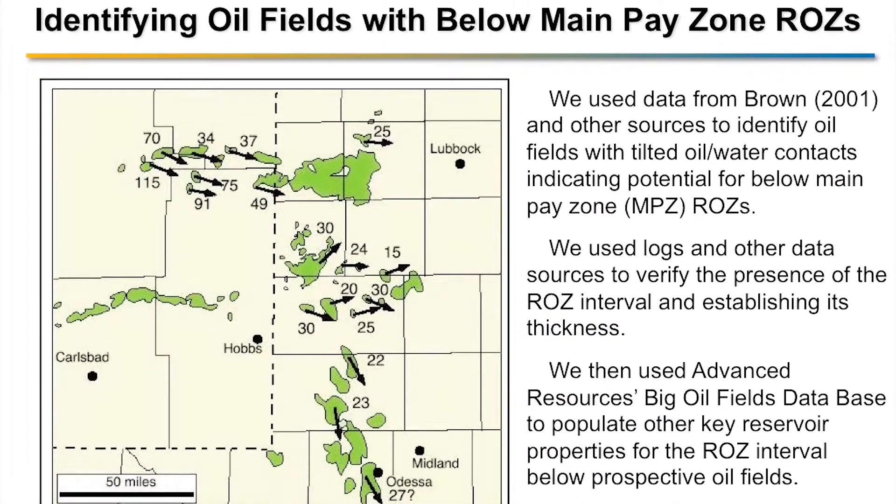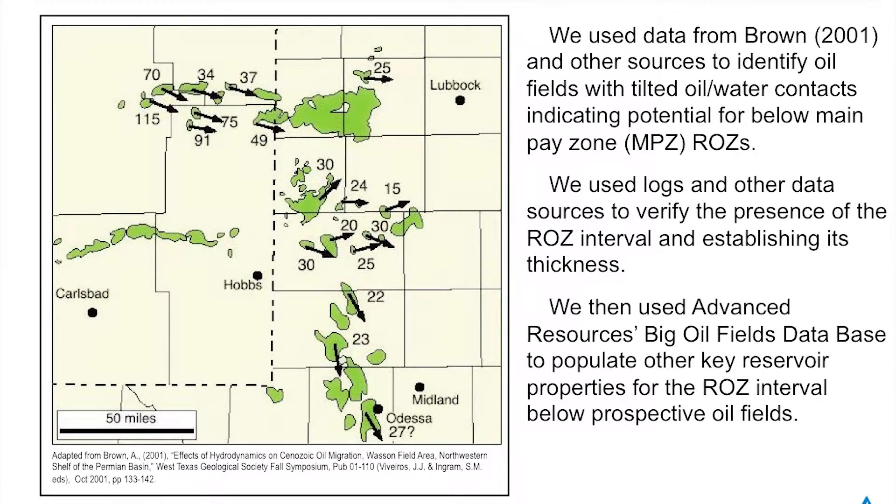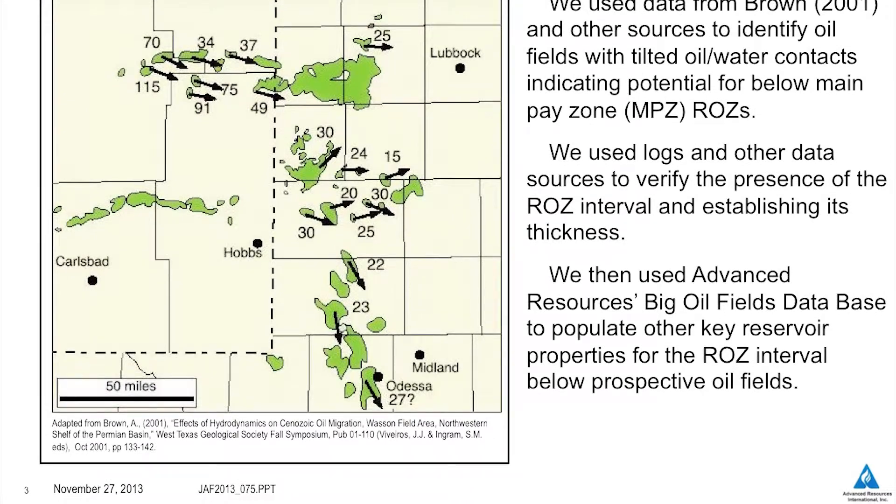So how is an oil field with below-main-pay-zone ROZs identified? Interestingly, we go back to the early work by King Hubbard, who began to look at the hydrodynamics that govern oil migration. Berg added on to that by recognizing that hydrodynamics can create tilted oil-water contacts. That was our first approach for identifying prospective fields. Then we assembled logs and other data to confirm that a residual oil zone existed below these oil fields, and finally populated the data using information from our big oil fields reservoir database.